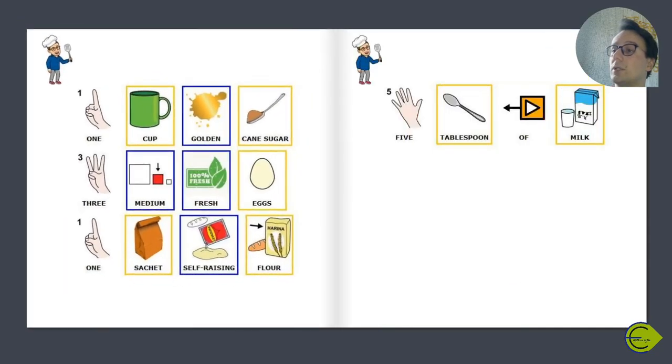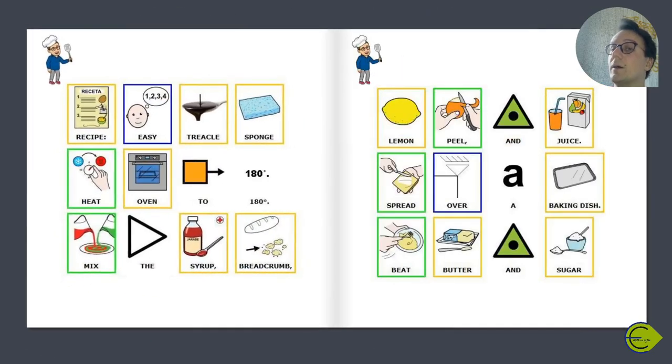1 cup golden cane sugar, 3 medium fresh eggs, 1 cup self-raising flour, 5 tablespoons of milk. Recipe: